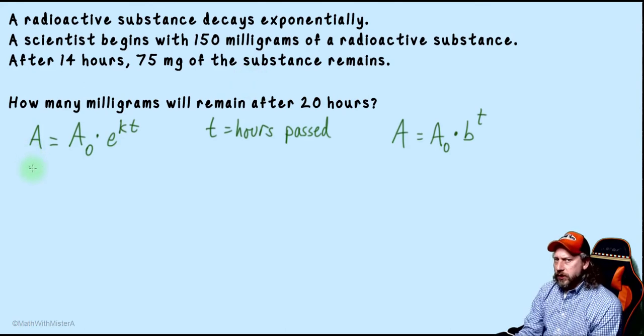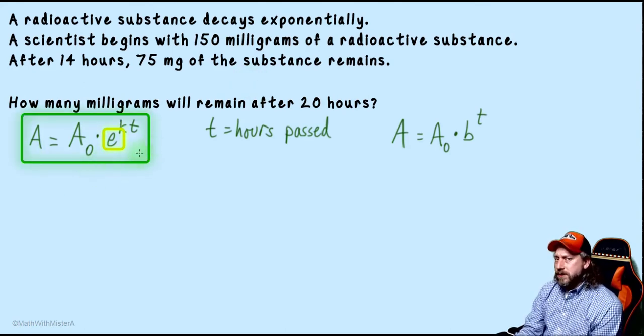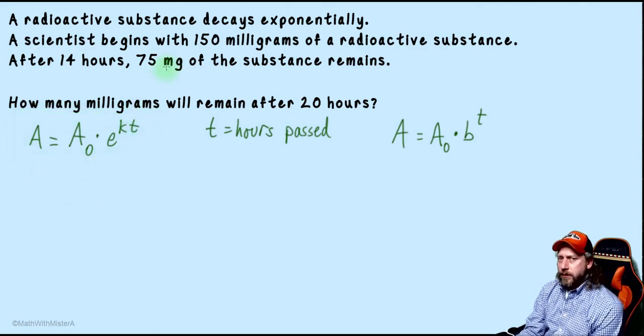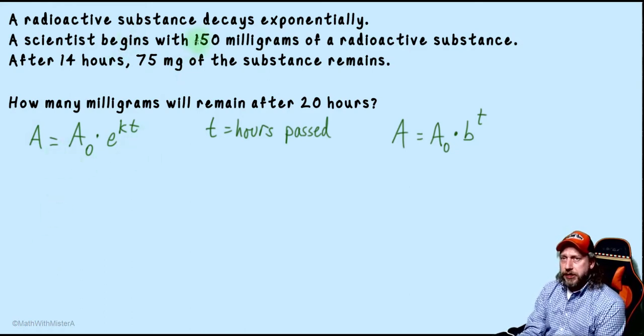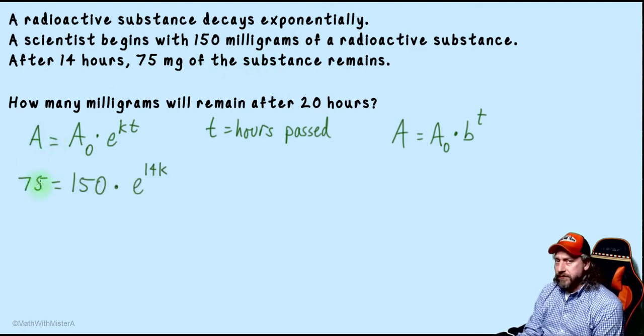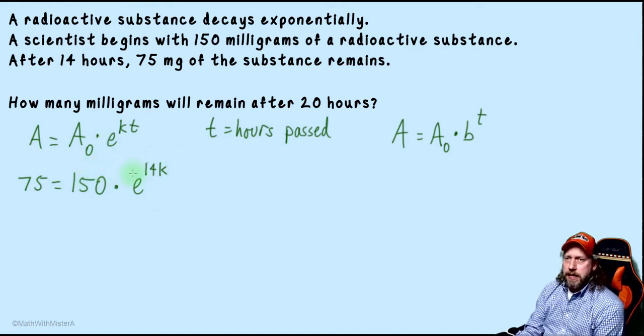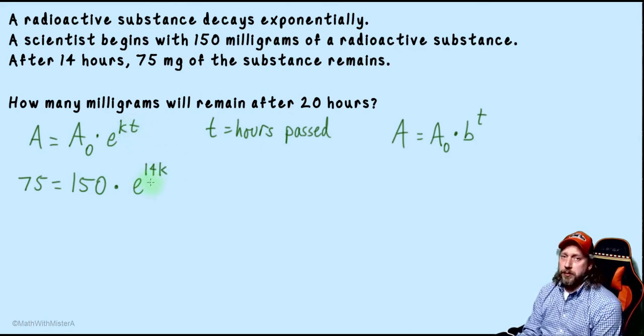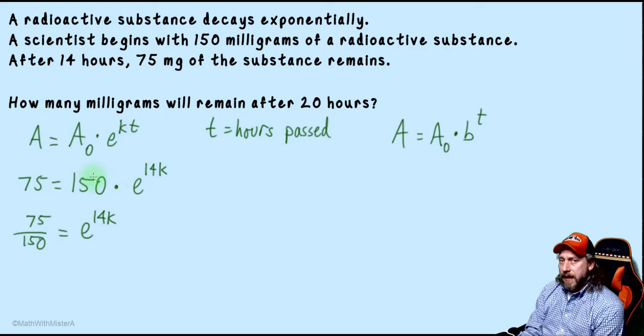We're going to look at how we could use either of these equations to answer this question. When we use this first equation that has base e, we need to know the value of k, the rate of decay in this continuous model. We can take some known information from this problem to substitute into this equation and solve for k. We know that our initial amount A₀ was 150 milligrams, and after 14 hours our amount was 75 milligrams. In our equation, that means the amount 75 milligrams occurs when we start with 150 milligrams and multiply by this exponential expression e to the 14k, where we substituted 14 in the variable t for time.